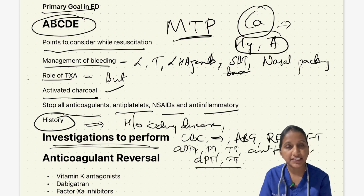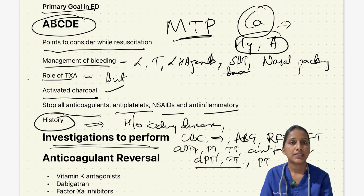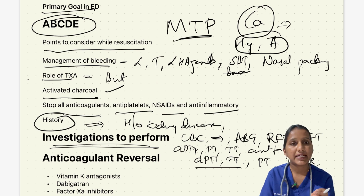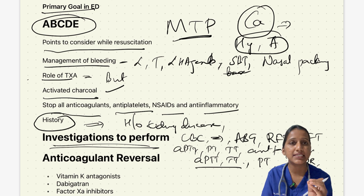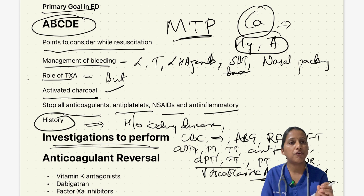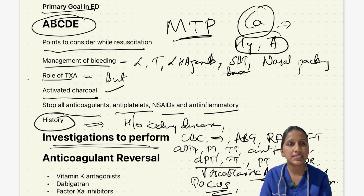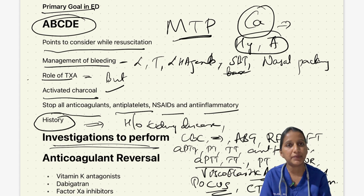For dabigatran, perform APTT and TT. For apixaban and rivaroxaban, perform PT and anti-factor Xa. For warfarin, use PT/INR. In hepatic dysfunction, viscoelastic assays such as TEG/ROTEM can guide resuscitation. To localize bleeding, point-of-care ultrasound can be performed; if inconclusive, a CT scan with contrast must be done.